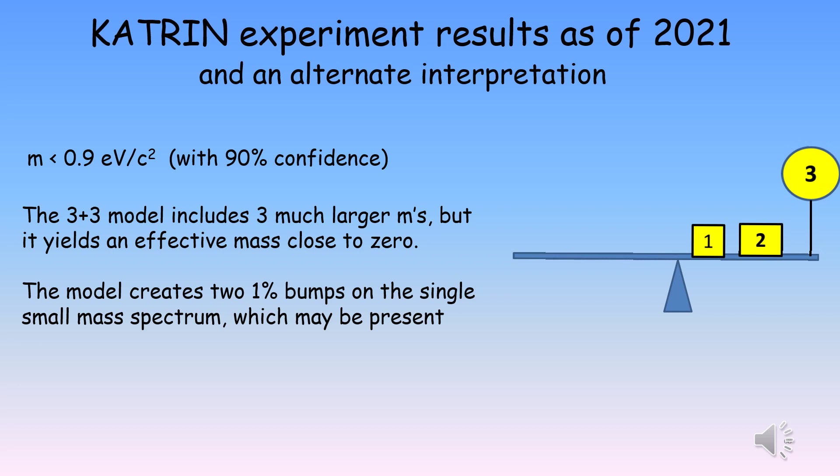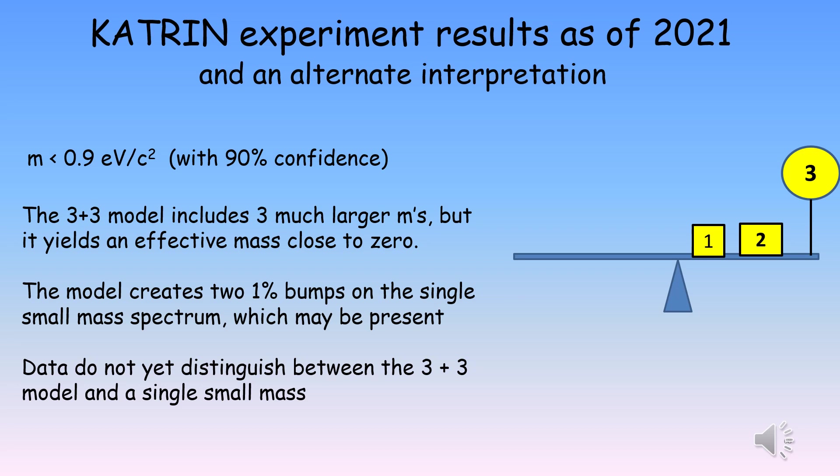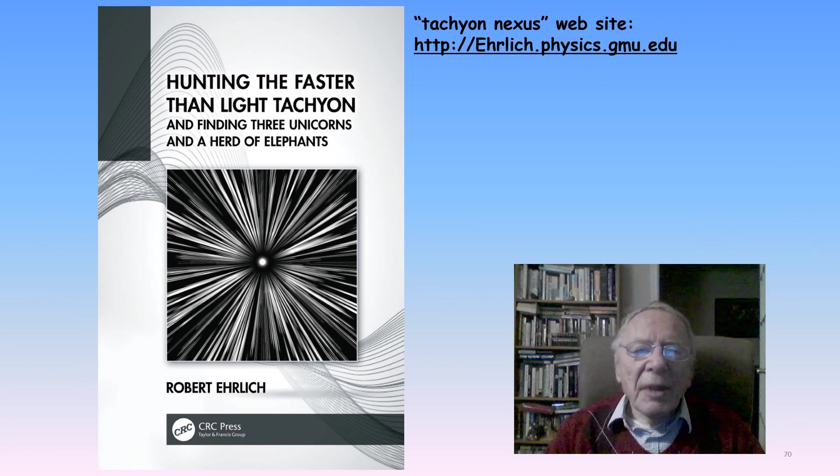Thus, if we fit the observed spectrum using the 3 plus 3 model, the only difference from the fit to a standard one is two 1% bumps in the spectrum. The data that KATRIN has taken as of 2021 do, in fact, show some indication of those two bumps being present, but the data are not yet sufficient to distinguish between the fits to 3 plus 3 model and that for a single small mass. Hopefully, by the end of the experiment, the data accumulated should be enough to tell whether the model with its tachyonic neutrino is right or wrong.